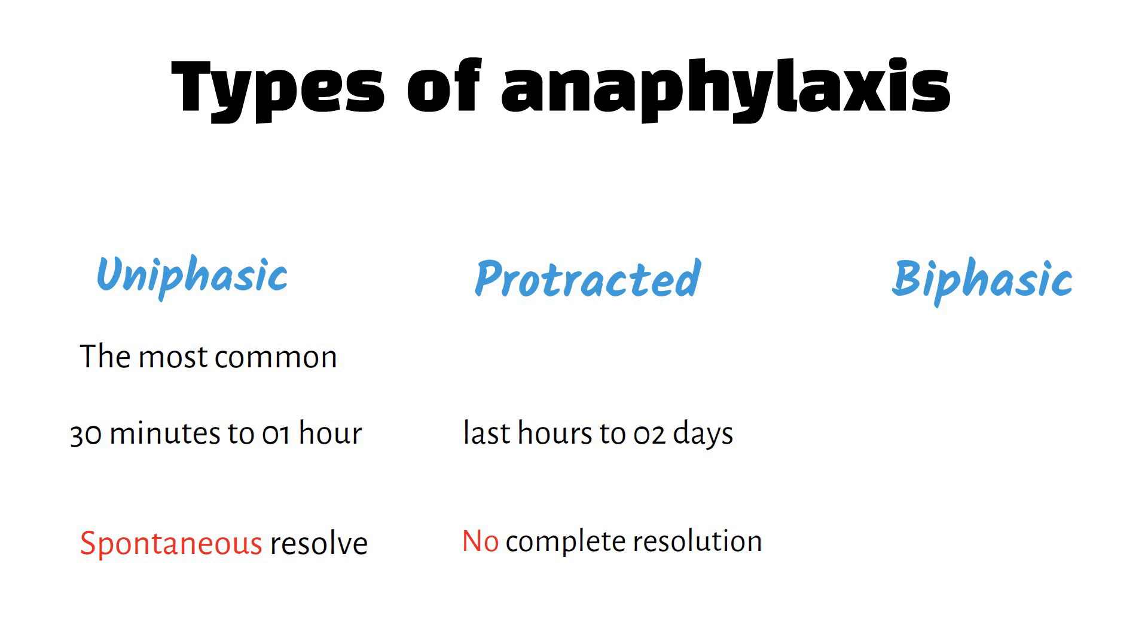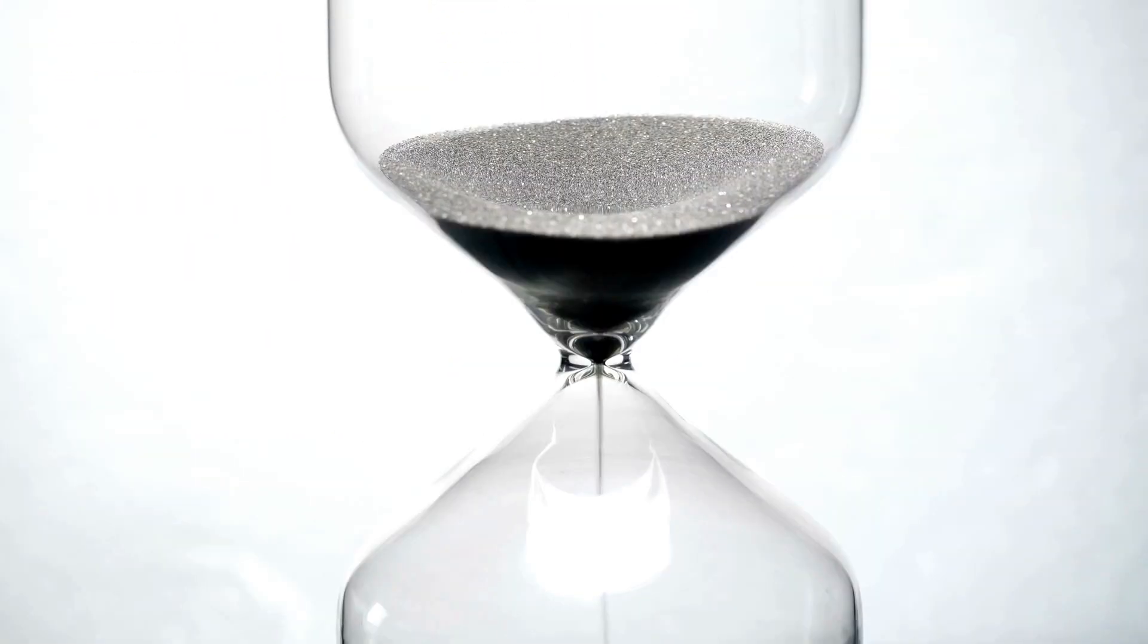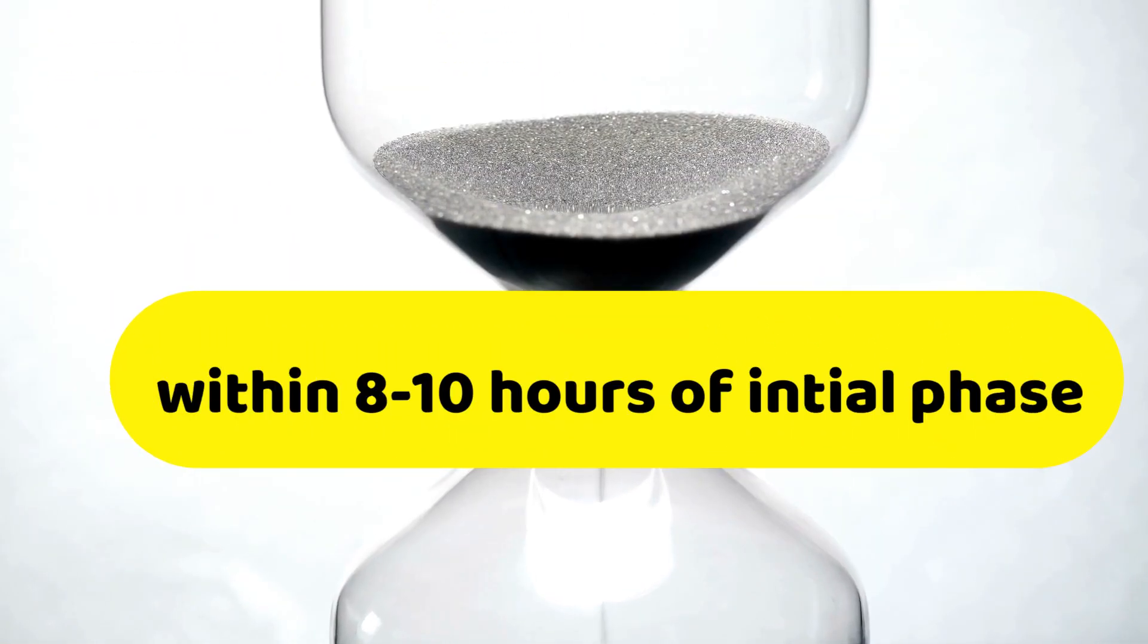Biphasic anaphylaxis is when there's a recurrence of features within 1 to 72 hours after the initial symptoms have resolved, even without the exposure to the trigger. This usually occurs within 8 to 10 hours of the initial phase.